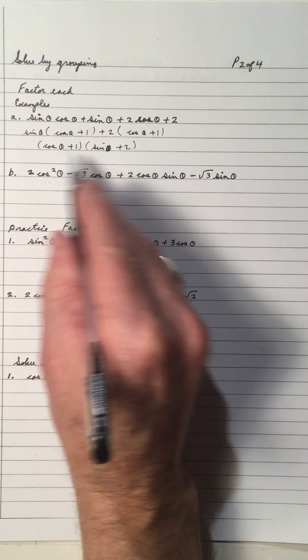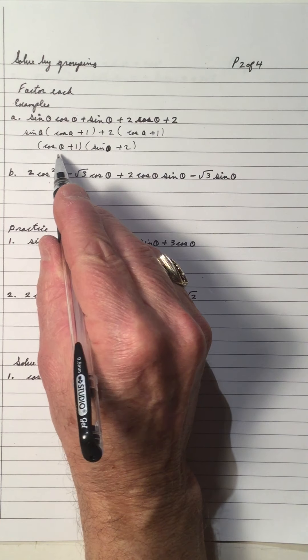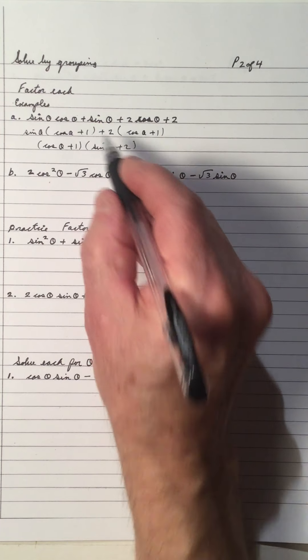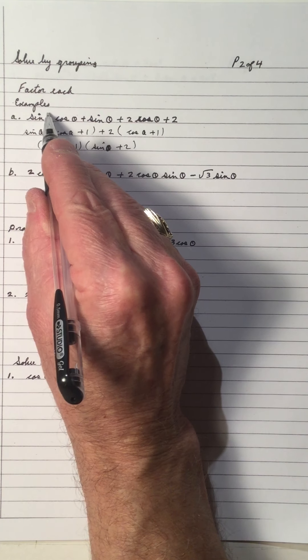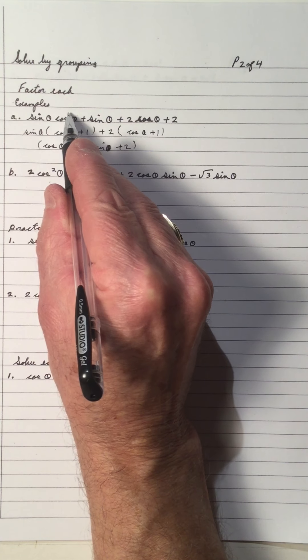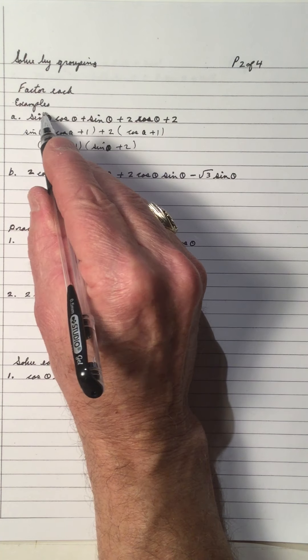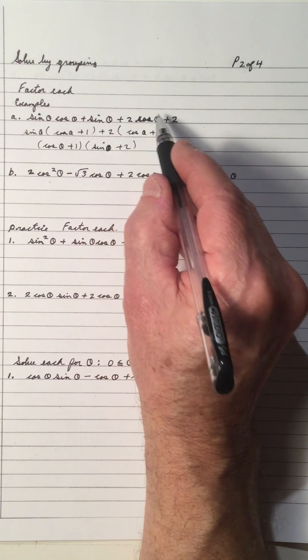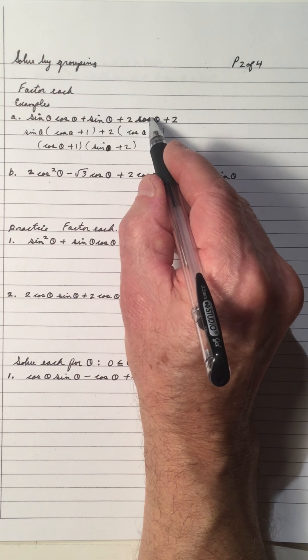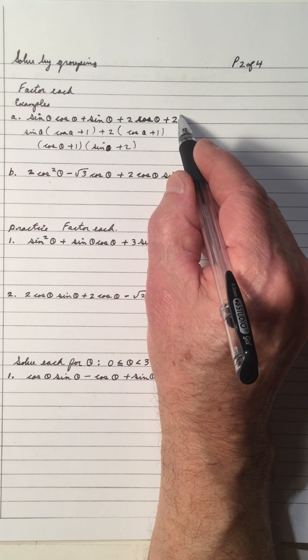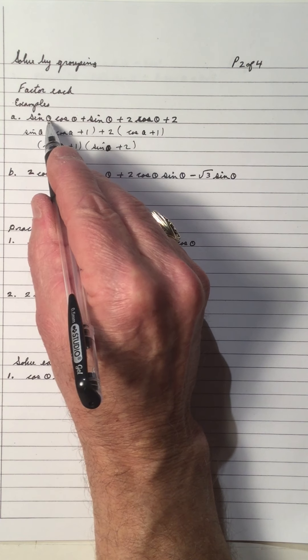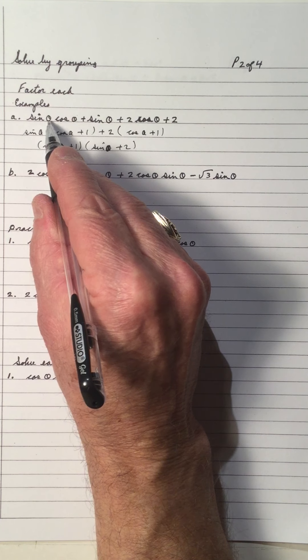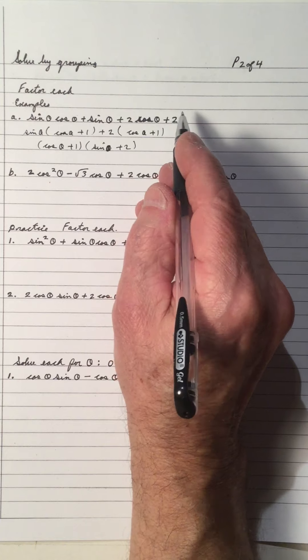And again, it's a quadratic because it has two different trig terms. Notice the degree: that's a one and a one, so one plus one, degree is two. Degree here is one, degree here is one, degree of two is zero. So the degree of this expression is two, making it a quadratic.